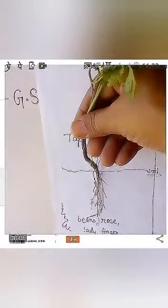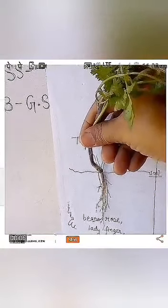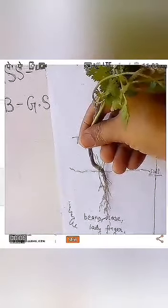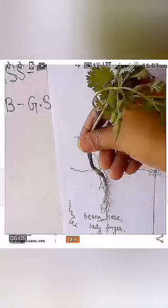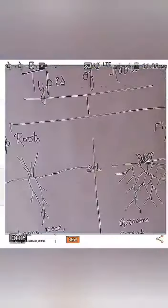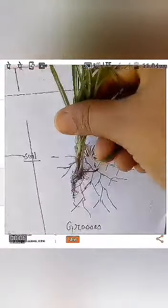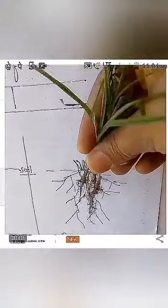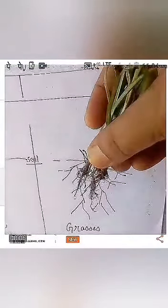Look carefully — this coriander plant has a single long root with thin roots arising from it, matching the taproot diagram. So the coriander plant is an example of taproot. Now I have collected some grasses — very easily available plants. Look at the grasses and their roots. They match the fibrous root structure: many thin roots arising from the base of the stem. So grasses have fibrous roots.